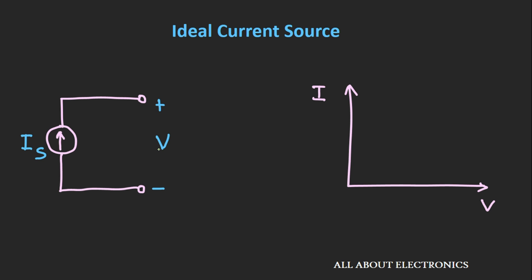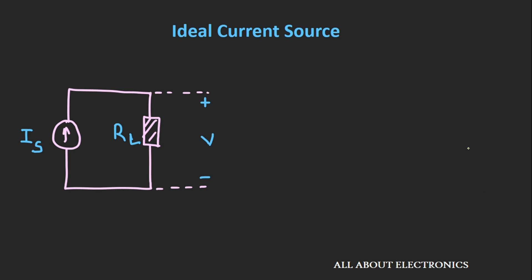If we see the current vs voltage plot, it looks like this. No matter what amount of voltage that appears across this current source, it delivers a constant current to the given load.